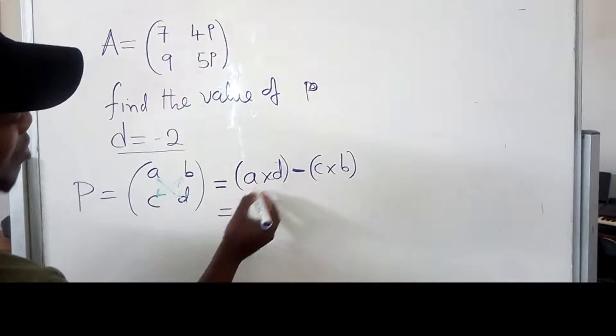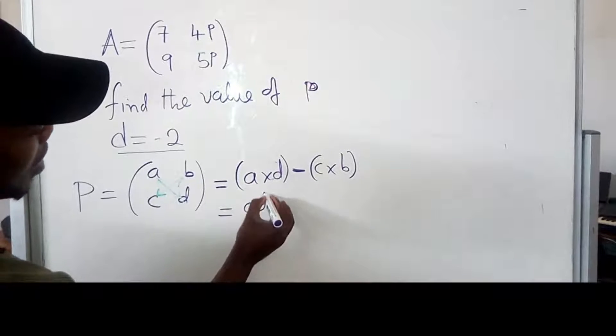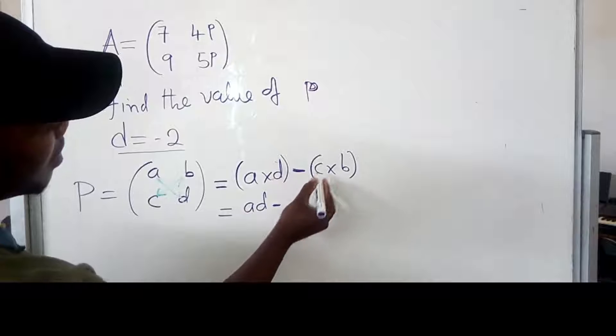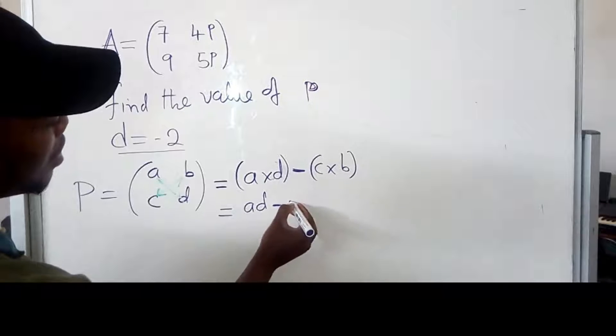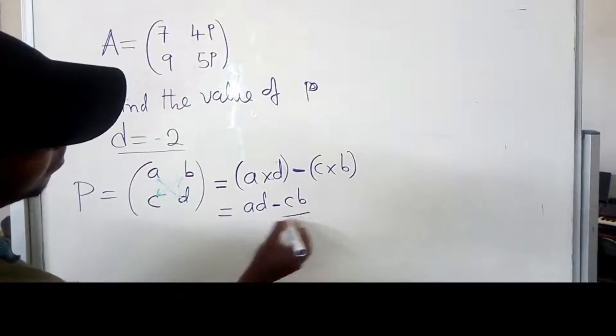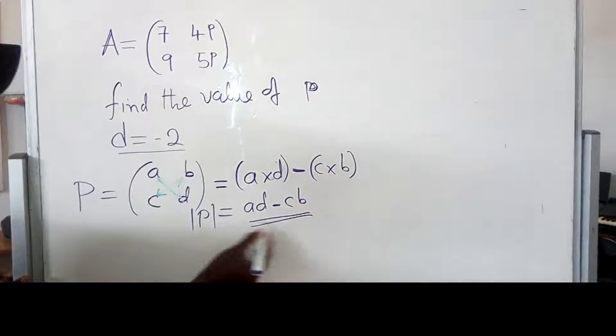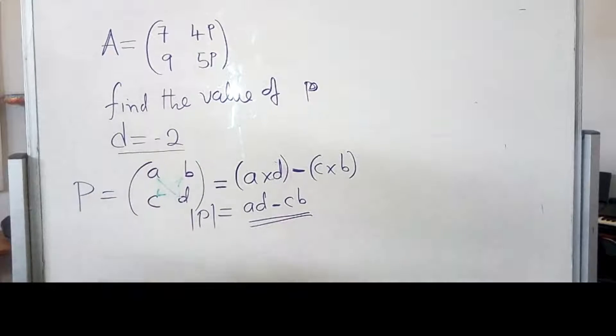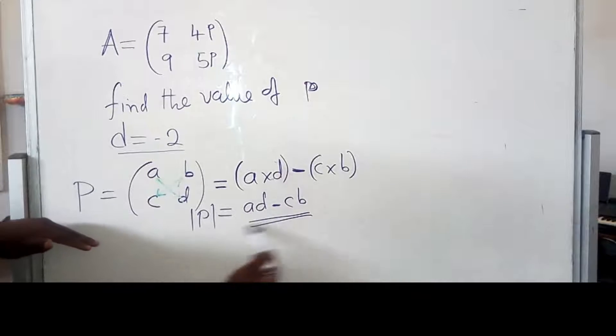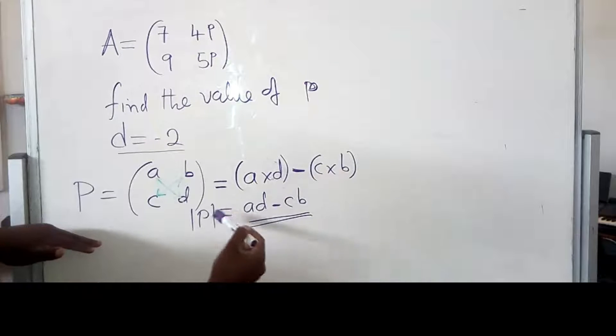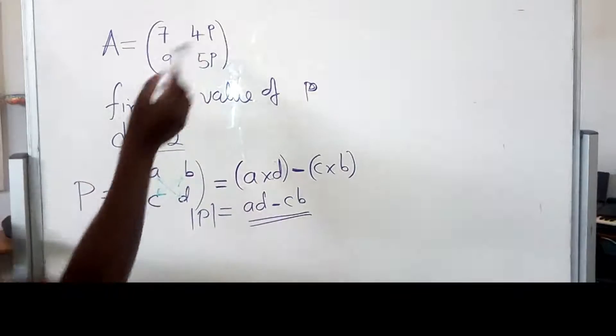And when you say A times D, the answer will be AD minus CB. So, this is our determinant. So, the determinant for this matrix is this one. So, now let's try to use this same idea. We use this idea to find the value of P.